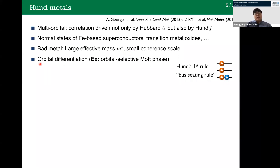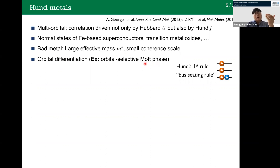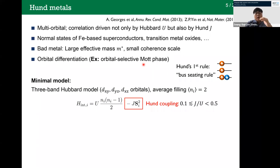An extreme example is the orbital-selective Mott phase, where some bands are Mott insulating while others are metallic, even though orbital parameters such as orbital level positions are almost the same. The minimal model to understand Hund metals is the three-band Hubbard model describing the T2g orbitals. The simplest symmetric interaction term has two parts: the Hubbard interaction, which penalizes charge fluctuation, and the Hund coupling, which favors larger spin. We typically choose J to be slightly smaller than U.